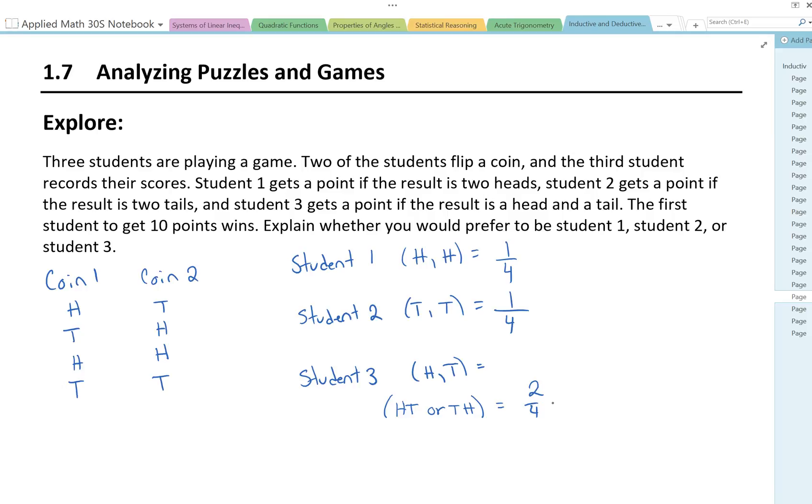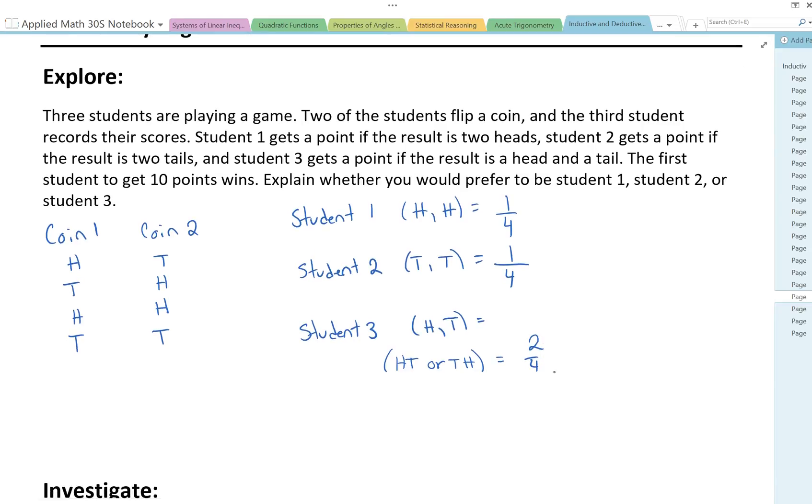So if you were to choose which student you wanted to be who's going to get to 10 points quicker? Well, student 3, because student 3 has a higher chance of getting that combination than student 1 or student 2.